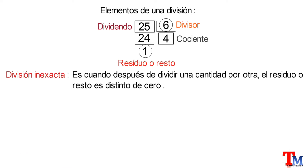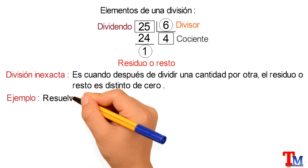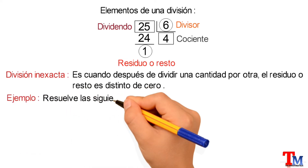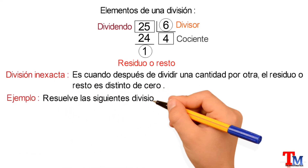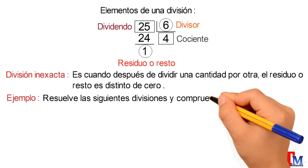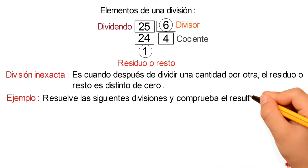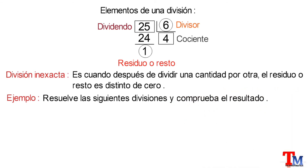Veamos algunos ejemplos. Resuelve las siguientes divisiones y comprueba el resultado. Literal A: 86 dividido para 3.